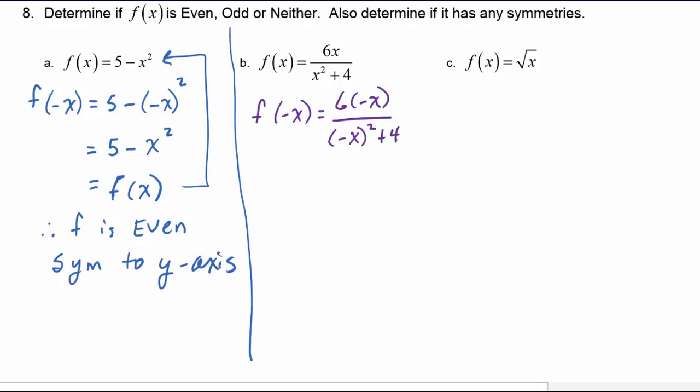When we simplify this, we get negative six x over x squared plus four, and we can see that's exactly the opposite of the original equation. So this is equal to the opposite of f of x. Therefore, we say that f is odd and it will have symmetry with respect to the origin.